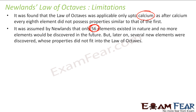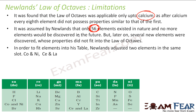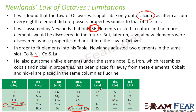He assumed that only 56 elements existed because at that time only 56 elements were known. Later, new elements were discovered and they never found a space in his table. Also, he adjusted two elements — cobalt and nickel — into one group, which is questionable since each group should ideally have only one element.